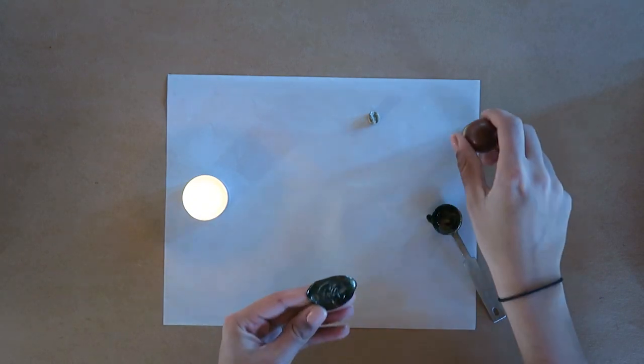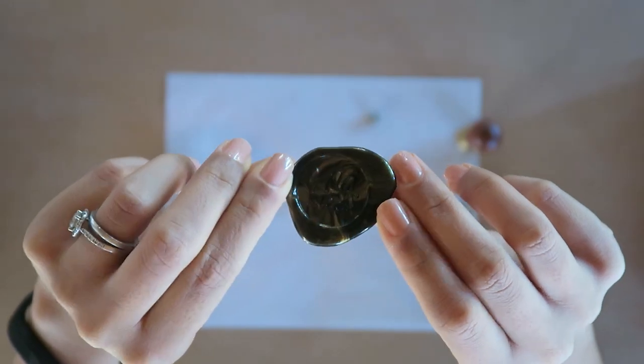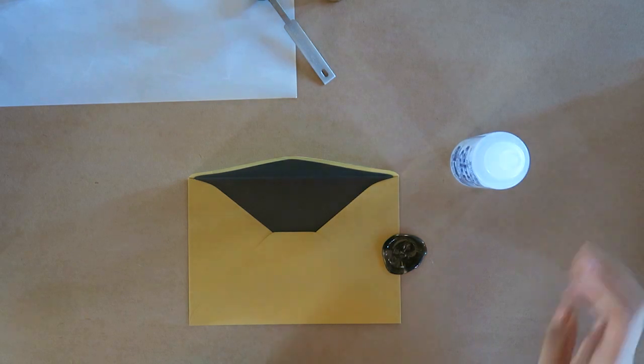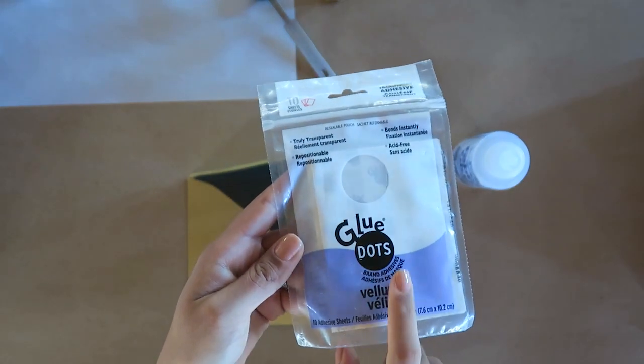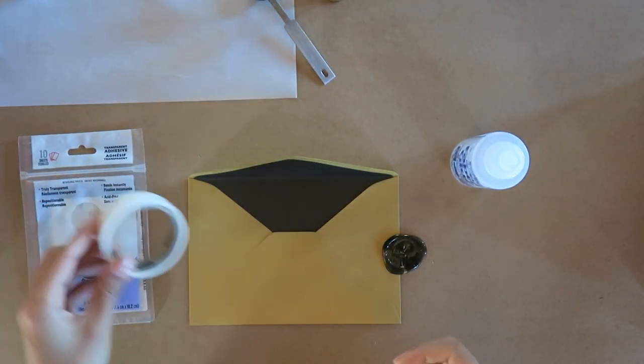Once you are happy with your wax seal shape, you need to adhere it to your envelope or your invitation. I love to use this Helmar fabric glue, otherwise you can use glue dots which are ultra strong and will keep the wax seal attached to the paper. I don't recommend using a glue stick because the adhesive on glue sticks is a little too weak.